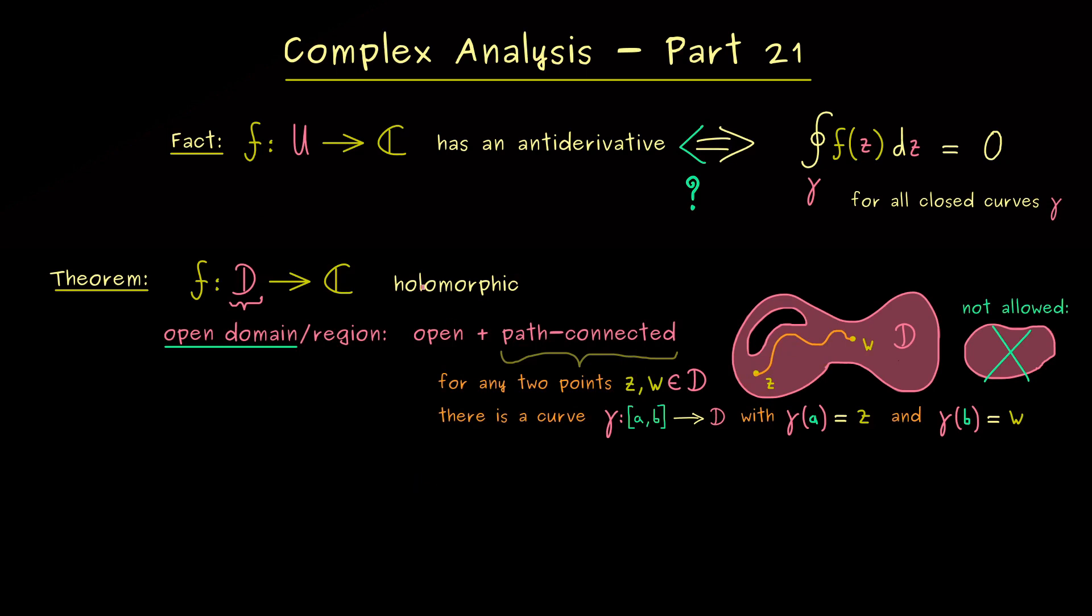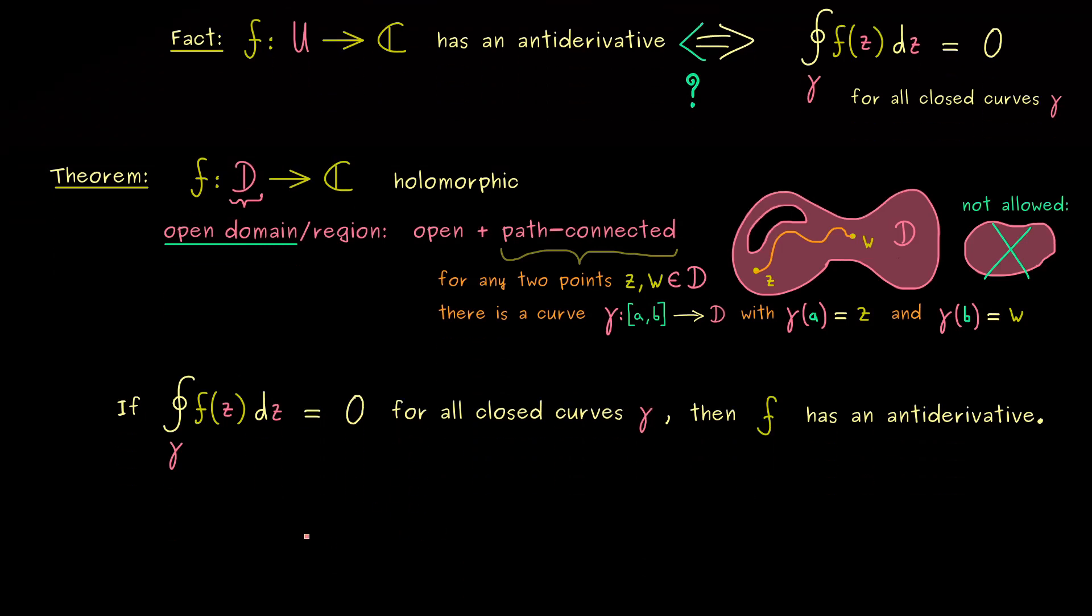What cannot happen is that D consists of two separate parts. But of course, still, D could have some holes in it. So for example, this part here of D could be missing, as long as we can connect any two points, we would say that the set is path-connected. There you see, this is the assumption we need, and then we have this converse statement from above. So more precisely, if this curve integral is zero, no matter which closed curve gamma we choose, then the function f has an antiderivative on the open domain D. So there is the statement, and for the rest of the video, I want to prove it.